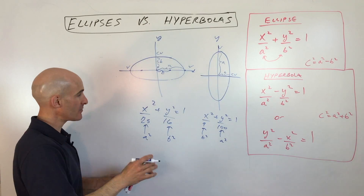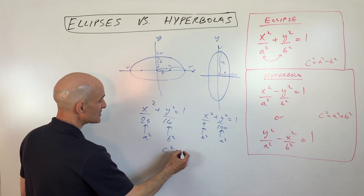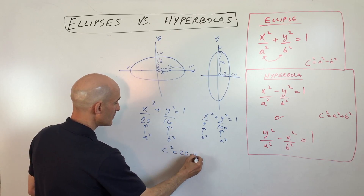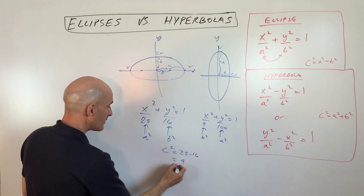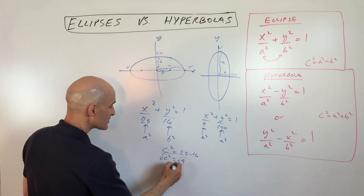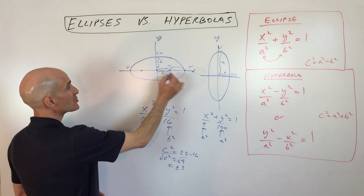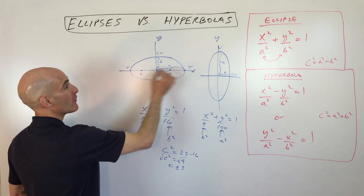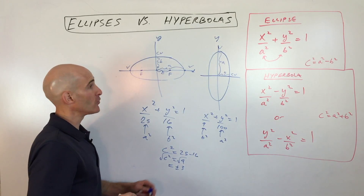For ellipses, we use the formula c squared equals a squared minus b squared — kind of like the Pythagorean theorem, but you're subtracting. For this example, c squared equals 25 minus 16, which equals 9. Taking the square root of both sides, we get plus or minus 3. The foci are on the longer axis, so we're going right 3 and left 3.